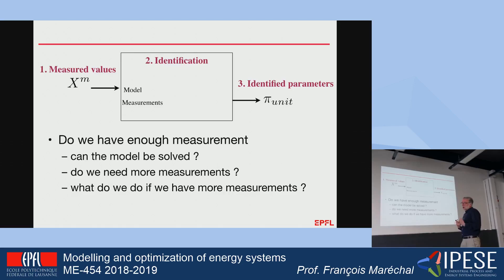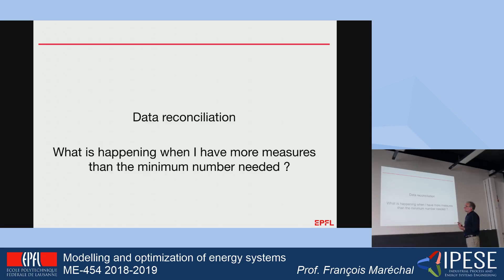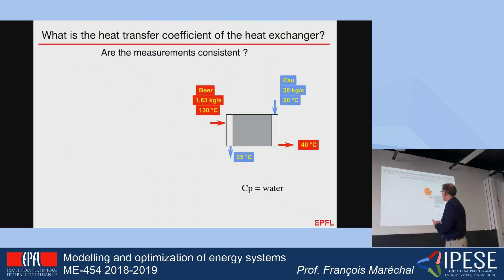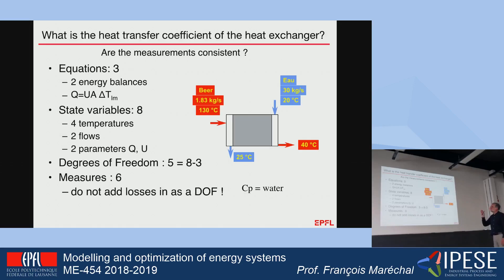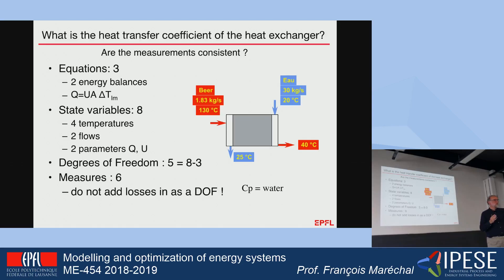Now that I have a method to verify that I have enough measurements, I would like to show how to calibrate or calculate the value of the parameters. The first step is what we call data reconciliation. What happens when I have too many measurements? Taking back this example — I have identified that I do have too many measures. So what would you do? You can use the redundant ones as a verification? Yes. Which one?